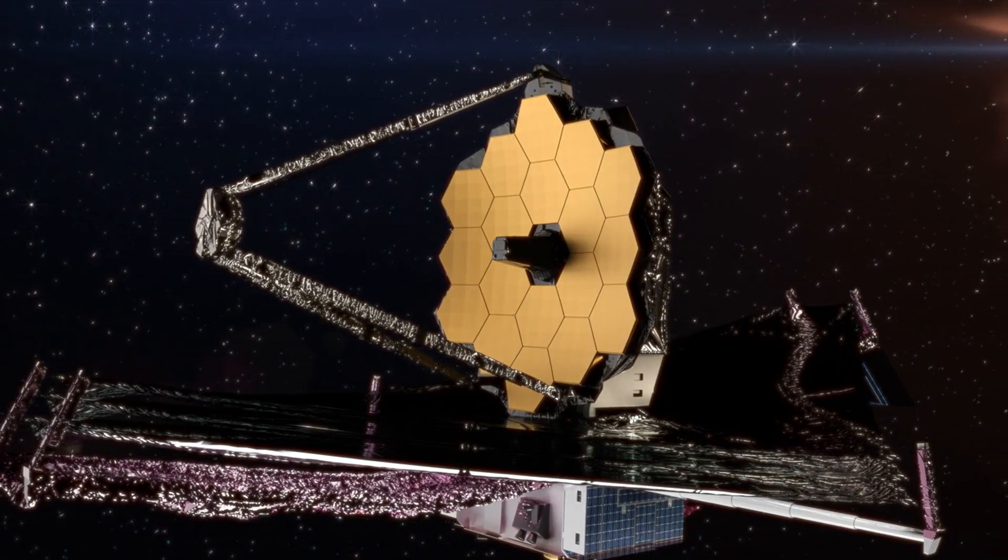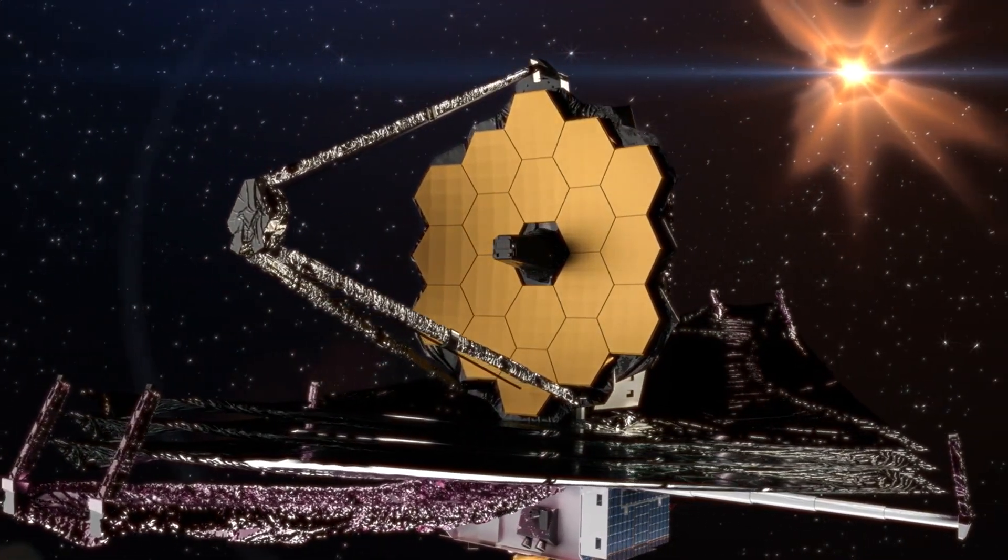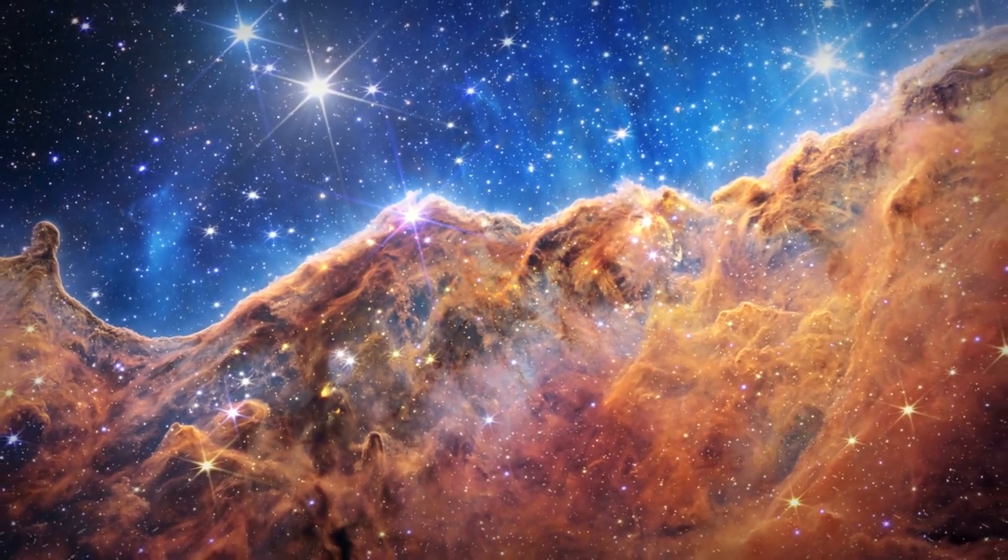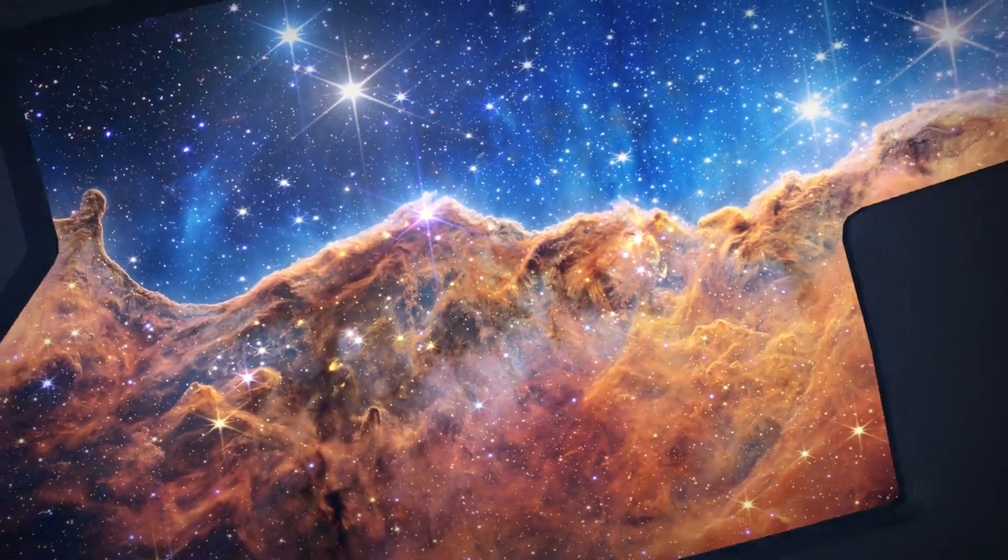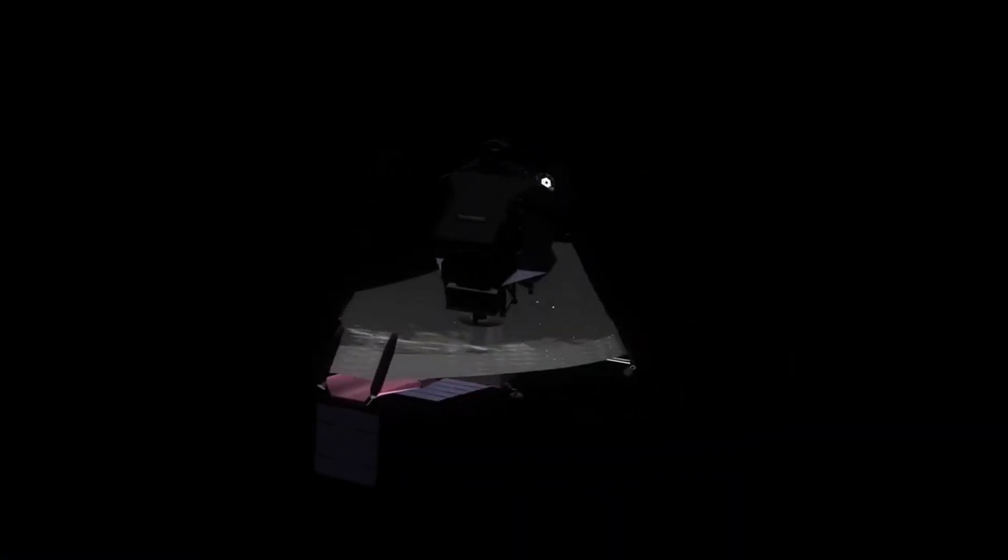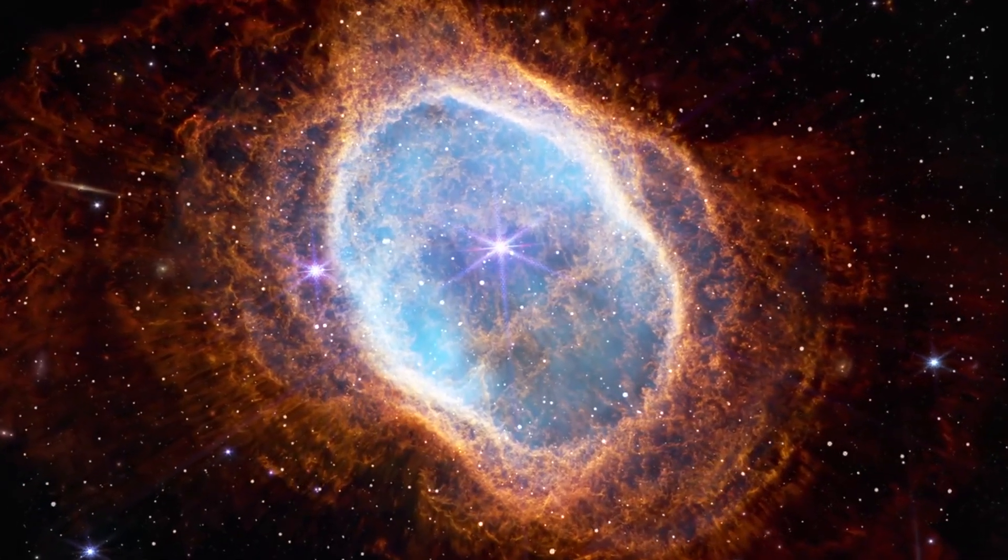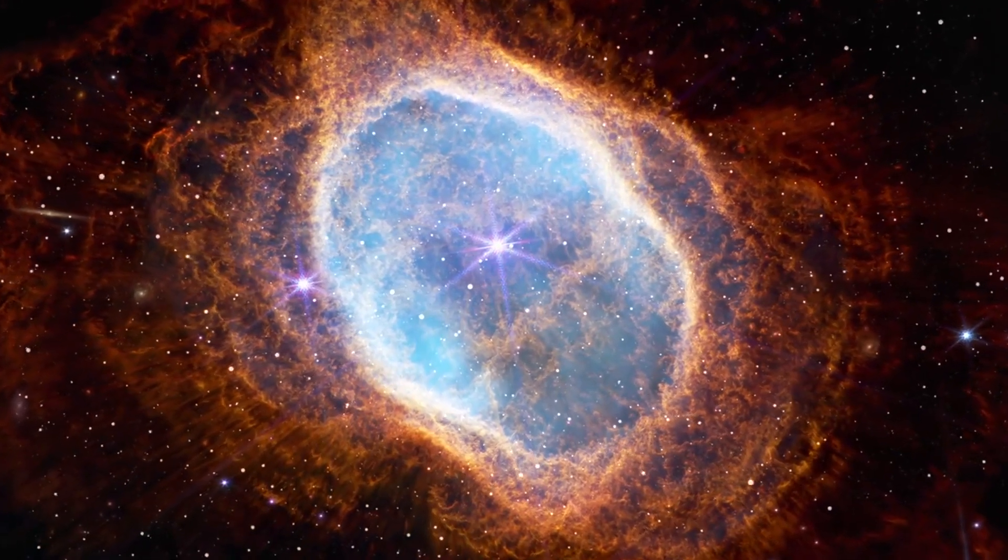The James Webb Space Telescope, JWST, is upending long-held beliefs in cosmology. A new ultra-deep image from JWST suggests we've made mistakes in our understanding of astronomy. The telescope, initially designed to observe the first stars, is instead presenting us with data that could overthrow the Big Bang theory and our concept of cosmic expansion.